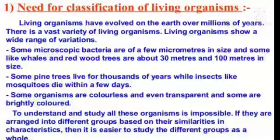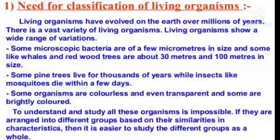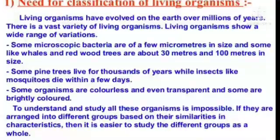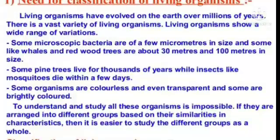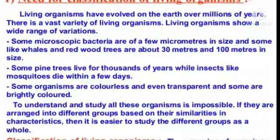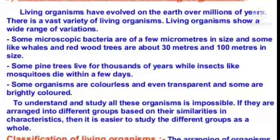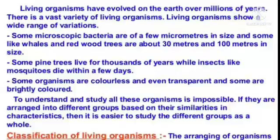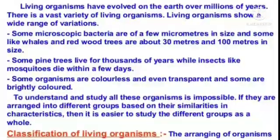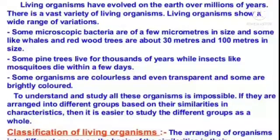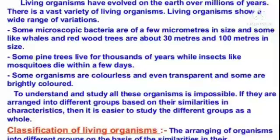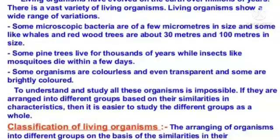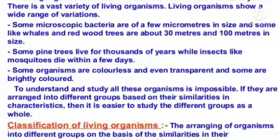Need for Classification of Living Organisms. Living organisms have evolved on the earth over millions of years and there is a vast variety of living organisms. They show a wide range of variations. Some microscopic bacteria are a few micrometers in size, and some like whales and redwood trees are about 30 meters and 100 meters in size. Some pine trees live for thousands of years, while insects like mosquitoes die within a few days. Some organisms are colorless and even transparent, and some are brightly colored. To understand and study all these organisms is impossible if they are arranged into different groups based on their similarities and characteristics, and it is easier to study the different groups as a whole.